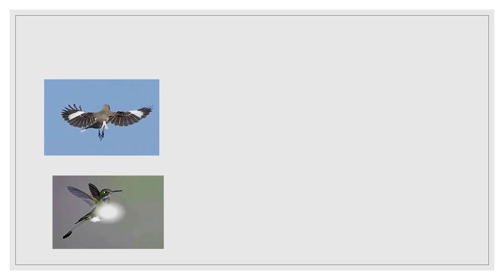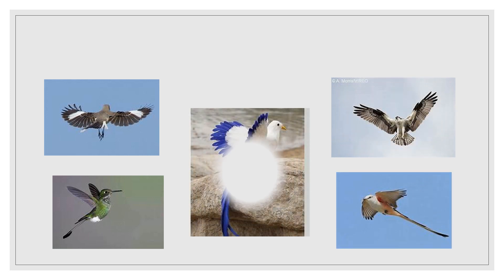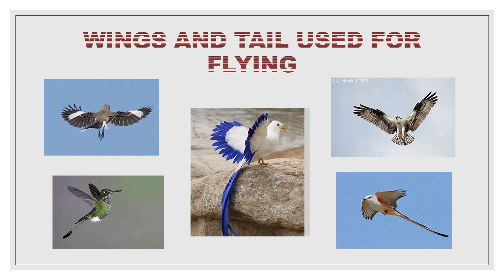Observe these pictures. You saw different birds and are aware that birds can fly. What does a bird use for flying? Yes, a bird uses its wings as well as its tail for flying. The tail of birds helps them to change direction. Wings and tail are used for flying.